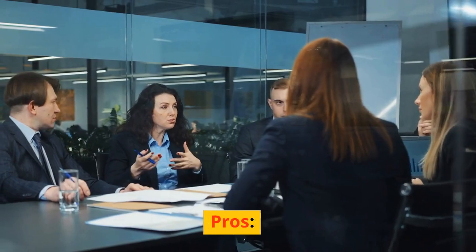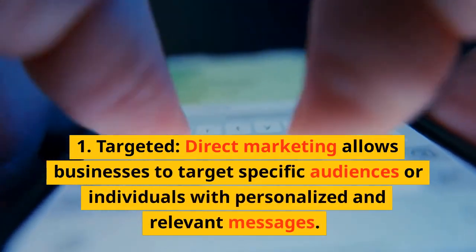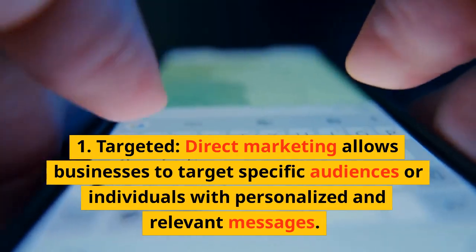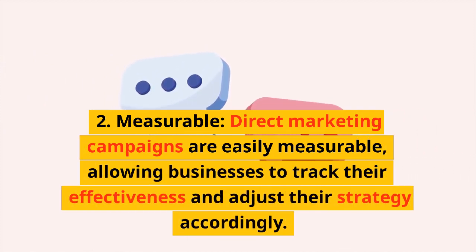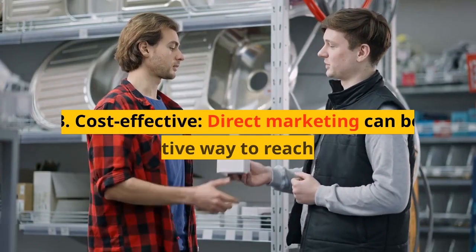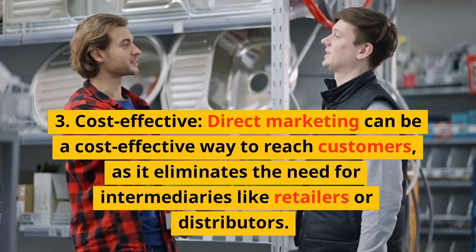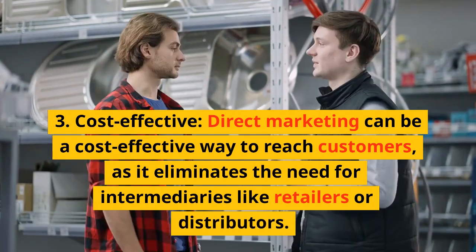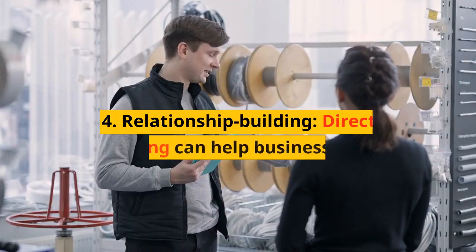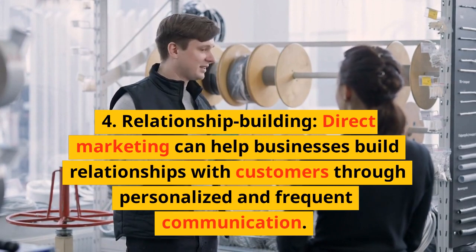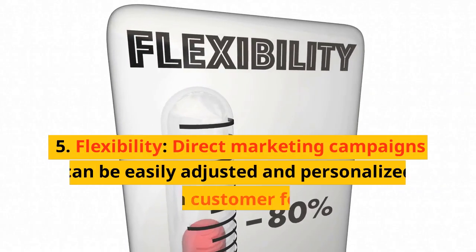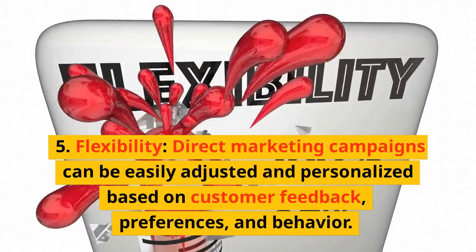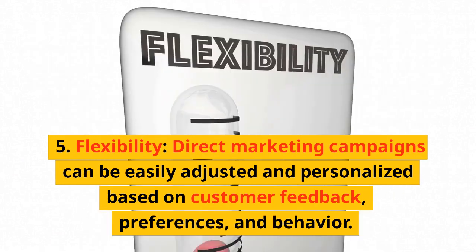Direct Marketing Pros: 1. Targeted — Direct marketing allows businesses to target specific audiences or individuals with personalized and relevant messages. 2. Measurable — Direct marketing campaigns are easily measurable, allowing businesses to track their effectiveness and adjust their strategy accordingly. 3. Cost-Effective — Direct marketing can be a cost-effective way to reach customers, as it eliminates the need for intermediaries like retailers or distributors. 4. Relationship Building — Direct marketing can help businesses build relationships with customers through personalized and frequent communication. 5. Flexibility — Direct marketing campaigns can be easily adjusted and personalized based on customer feedback, preferences, and behavior.